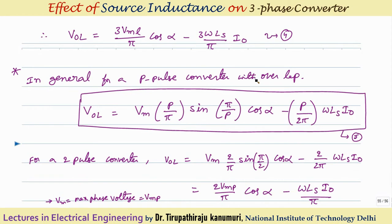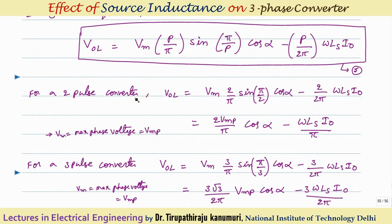For the general case of a P-pulse converter with overlapping, the formula is: VOL = Vmax × (P/π) × sin(π/P) × cos α − (P/2π) × ωLs × I₀. For the 2-pulse converter (single-phase), substituting P=2: VOL = Vmax × (2/π) × sin(π/2) × cos α − (2/2π) × ωLs × I₀. Since sin(π/2) = 1 and Vmax is the phase voltage Vmp, this simplifies to: VOL = (2Vmp/π) × cos α − ωLs × I₀/π.